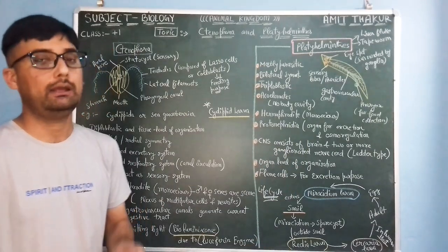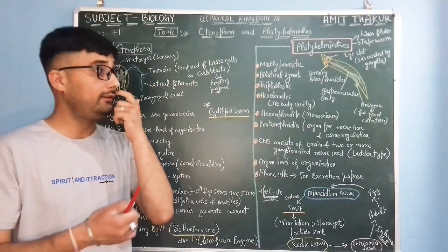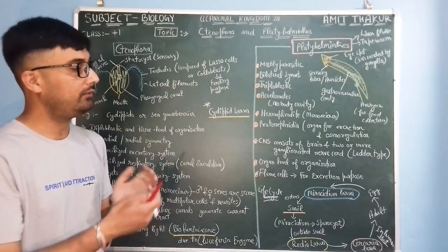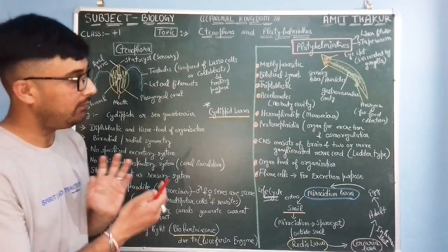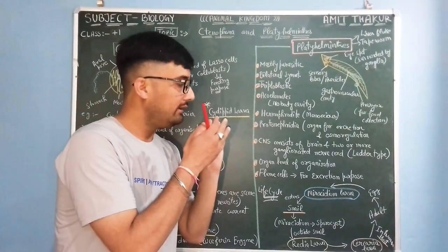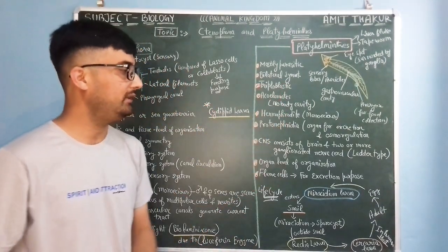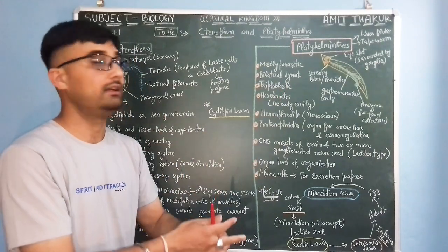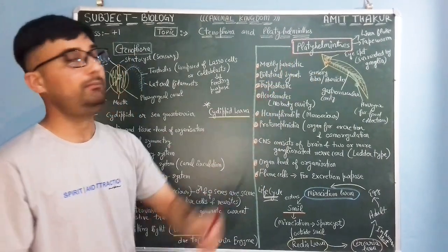See that, brain is not fully developed, it is reduced but the indications of actually the development of the brain has been seen in case of Platyhelminthes or beginning of the development of brain occurs in Platyhelminthes.